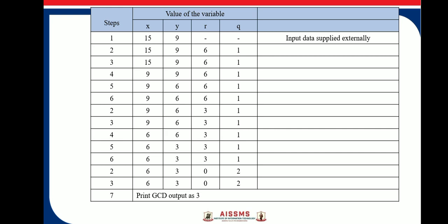So here, X is 9, Y is 6 and 6th step is, again, go to step 2. So therefore, X is 9, Y is 6 and go to step 2.